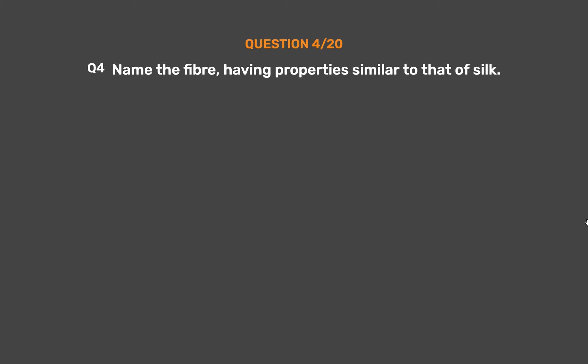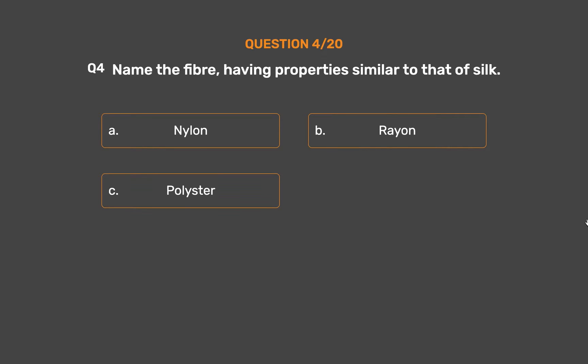Question Number 4. Name the fiber having properties similar to that of silk. Option A: Nylon. Option B: Rayon. Option C: Polyester. Option D: None of these.